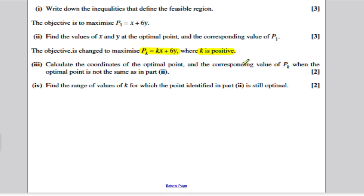It says calculate the coordinates of the optimal point and the corresponding value of PK when the optimal point is not the same as part 2. Again, just because the objective function has changed, we still know that the maximum will occur at either of the vertices. So it will be either 0,0, 0,7, or 4.2, 4.2.